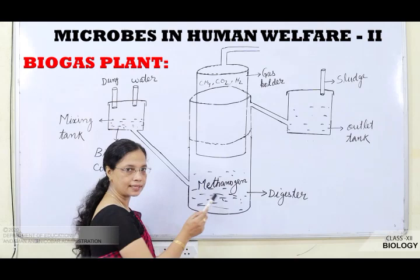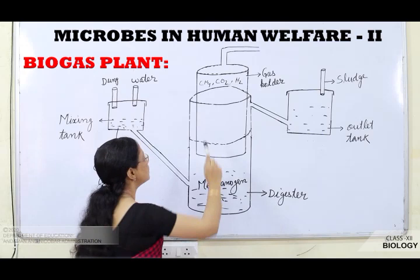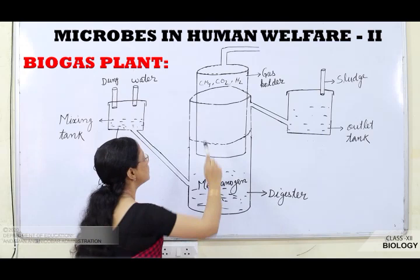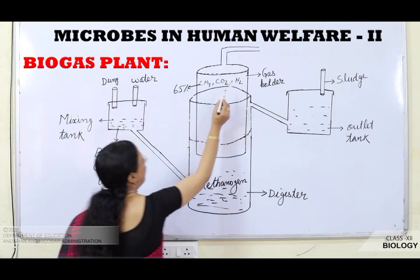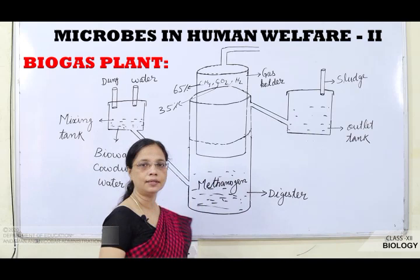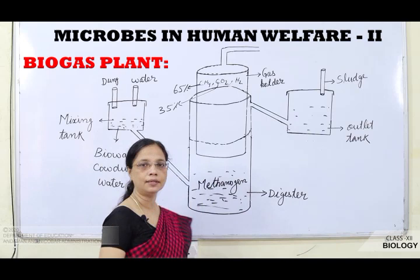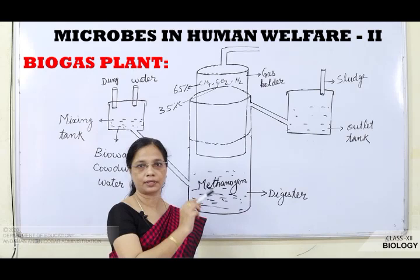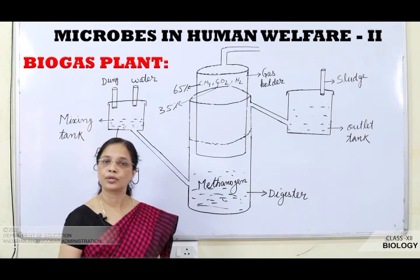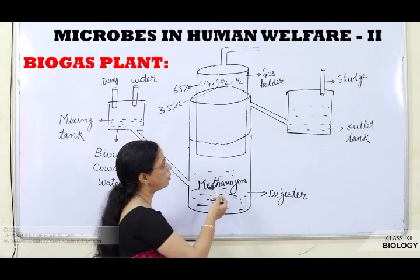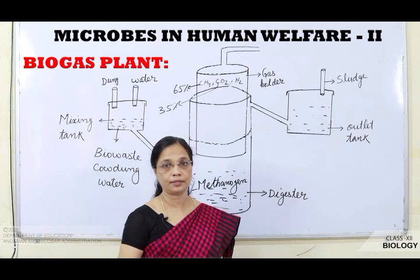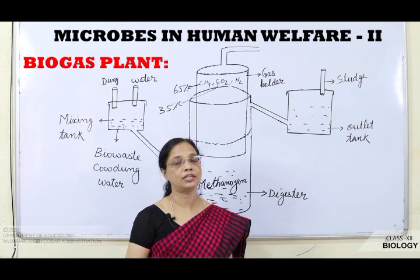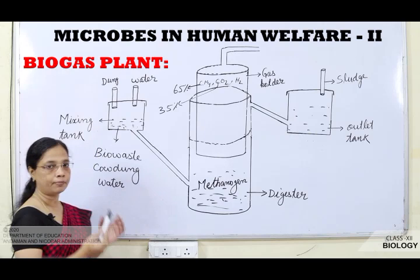The digester is a completely sealed chamber with no oxygen available. Since methanogens are anaerobic bacteria, the actual process of digestion of bio-waste takes place here. After digestion, gases are formed and collected in the gas holder — a mixture of methane (~65%), carbon dioxide (~35%), and other gases. An outlet above the gas holder supplies the gas to nearby houses for cooking and lighting purposes.